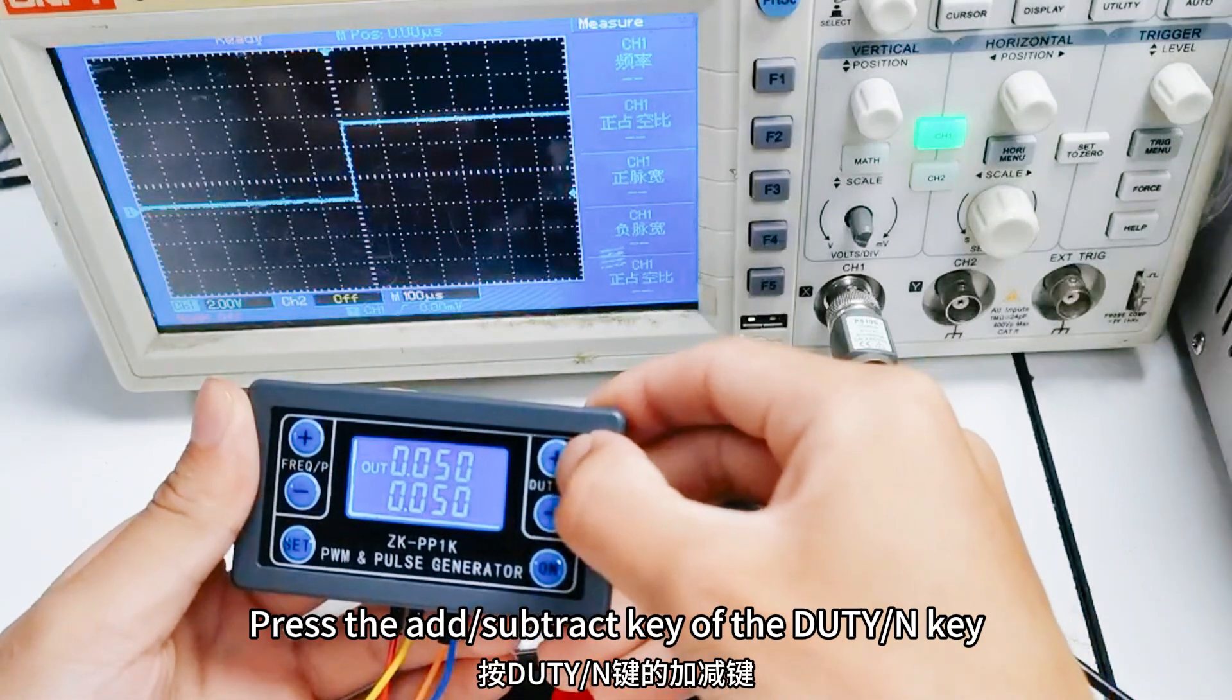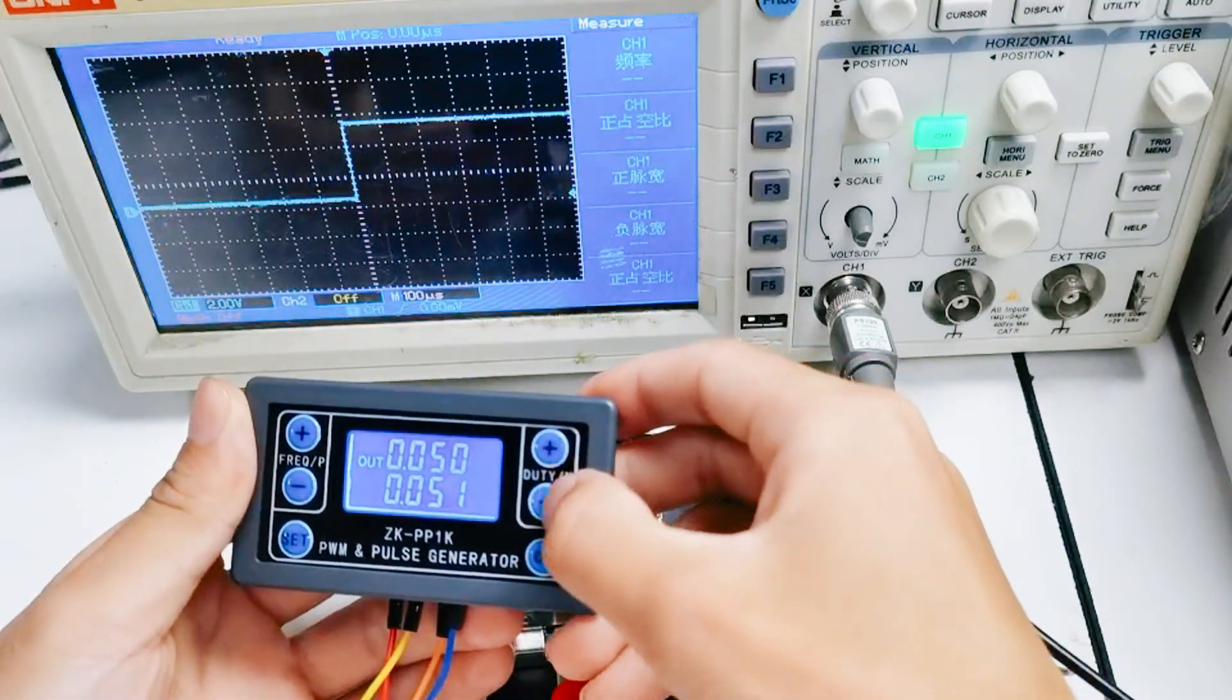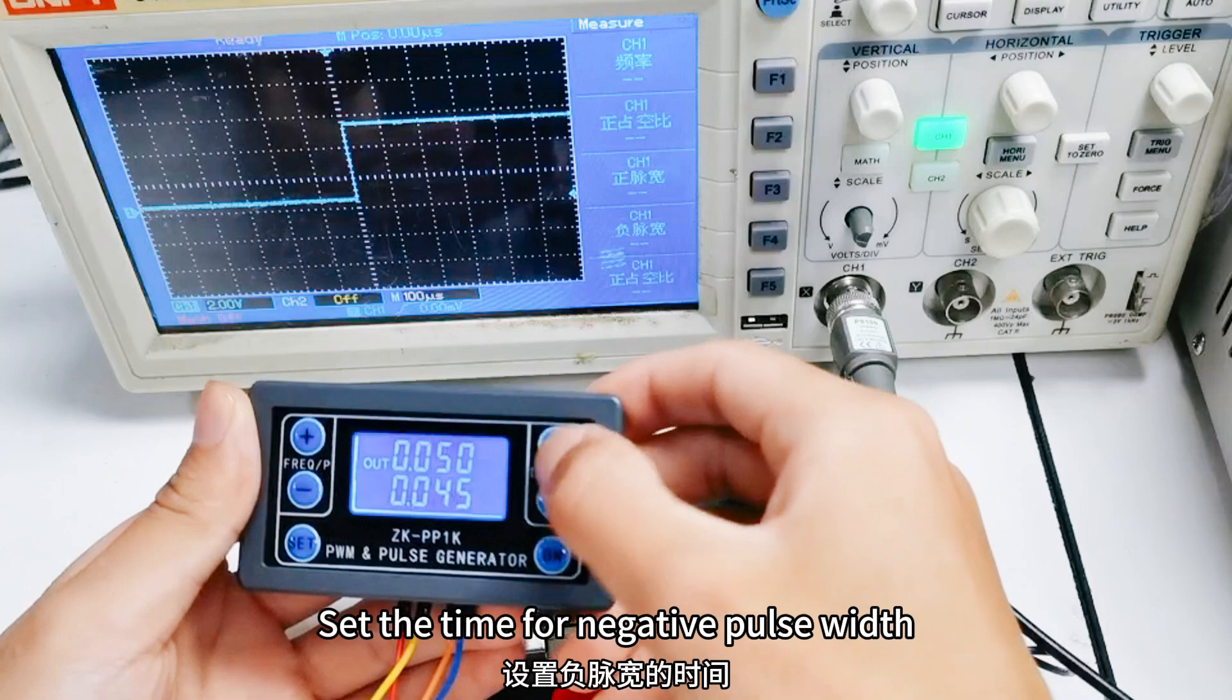Press the add, subtract key of the duty NT. Set the time for negative pause width.